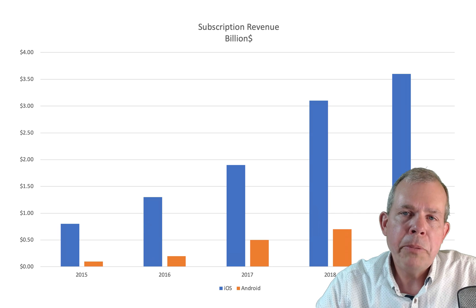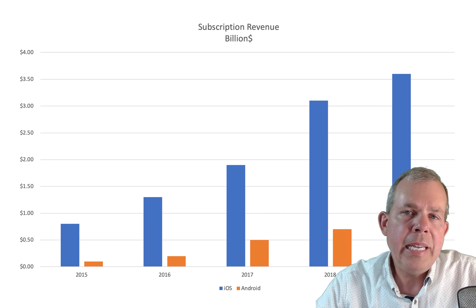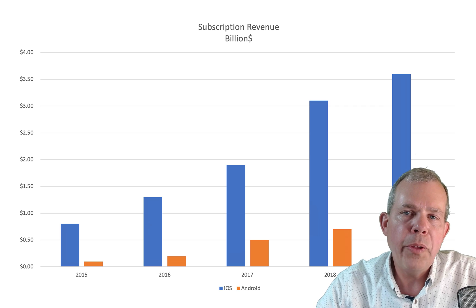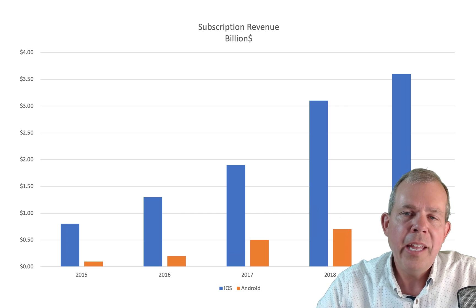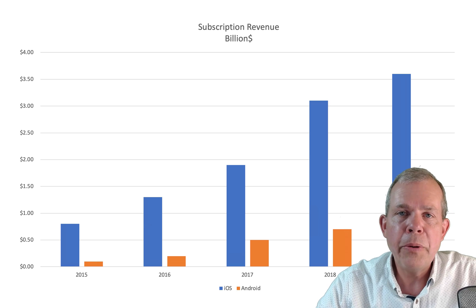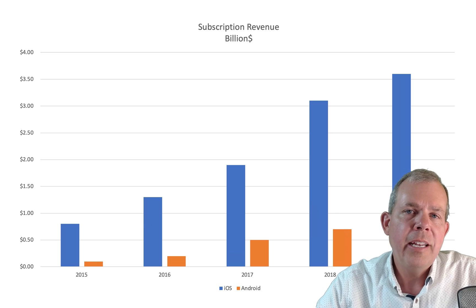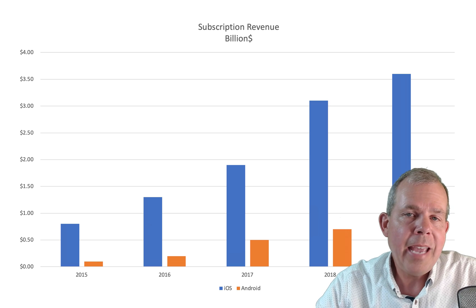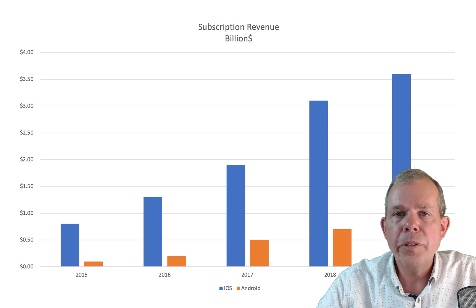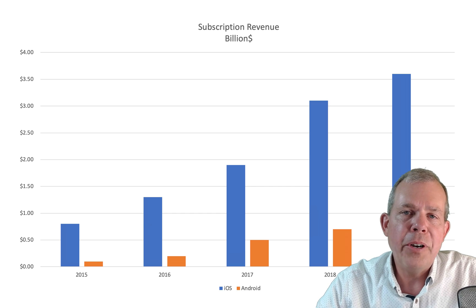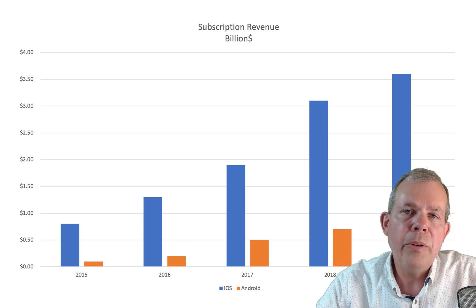Subscriptions — things like Netflix or an annual fee for use of an app — are another big revenue area. There is a 30% cut that these stores take from you if you're selling an app or any kind of subscription. So if you download Netflix, you can't actually subscribe to Netflix in the app — you have to do that on their website. They don't want to give 30% of their revenue to Apple or Google just for the privilege of getting you as a customer.